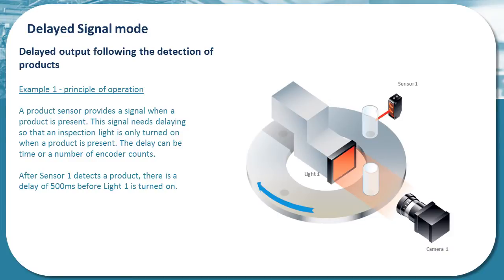Here we see an example of the CC320 in delayed signal mode. This is where a product is detected and there is a delay before an output is activated — in this case turning on a single light and triggering a single camera. The delays from the trigger signal to the outputs can either be based on time or encoder counts. Here, a simple delay of 500 ms is set before the light and camera are turned on after a product is detected.